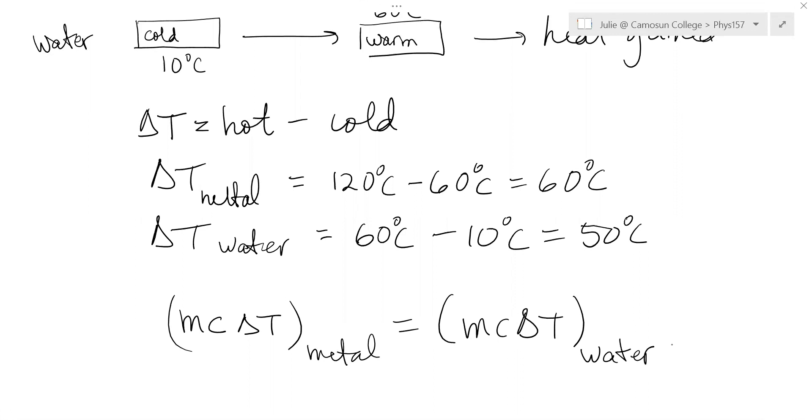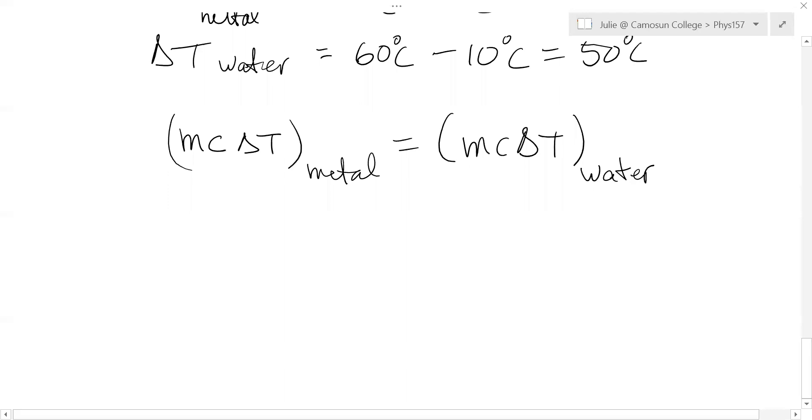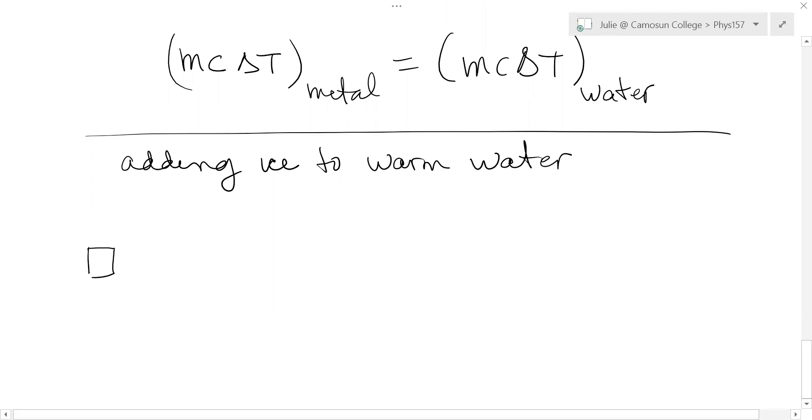Another pretty tricky question that you often get is, how much ice do you have to put in a hot cup of coffee to get cold water? Or cool off your cup or something like that. This is adding ice to warm water. The thing you have to remember is, you start out with this piece of ice. Say it's at negative five degrees Celsius. First, you're going to have to bring it up to water at zero. You're going to have to MC ice delta T. Delta T would be hot minus cold. Zero minus minus five. Delta T would be five. It's still ice. It's at zero.